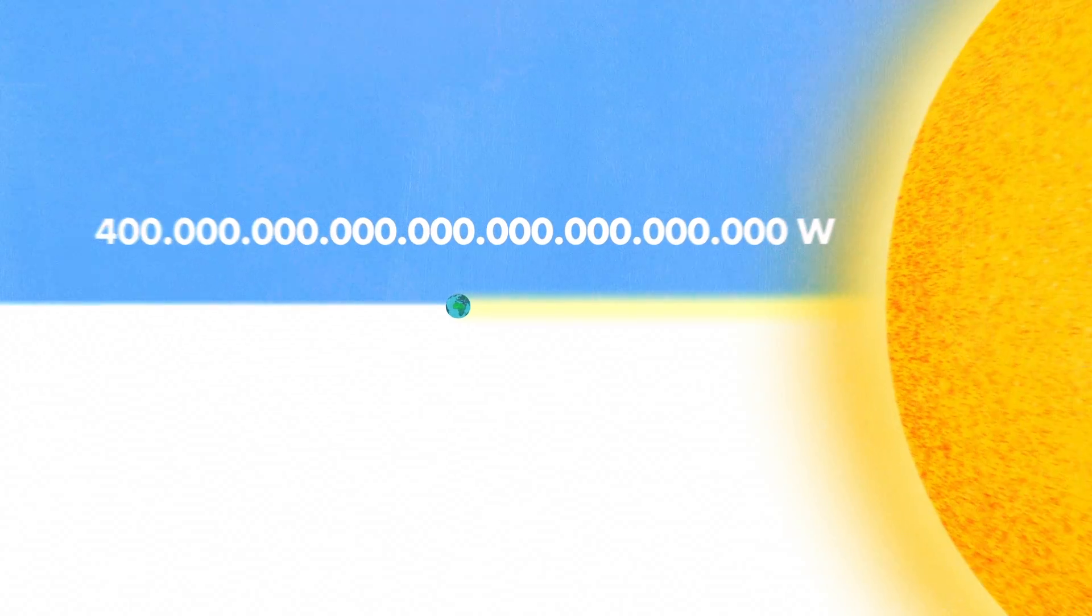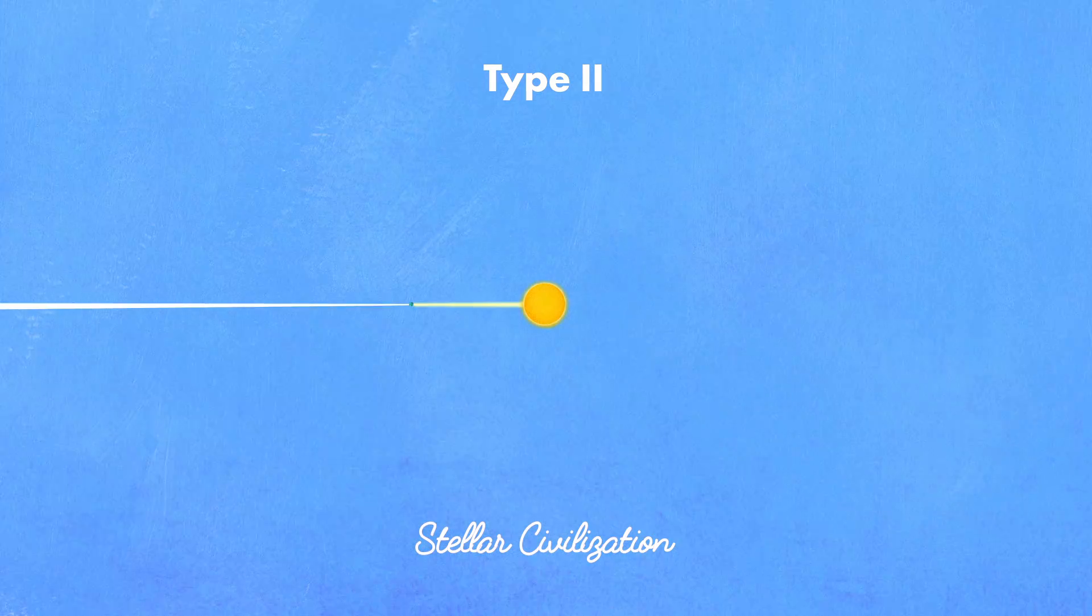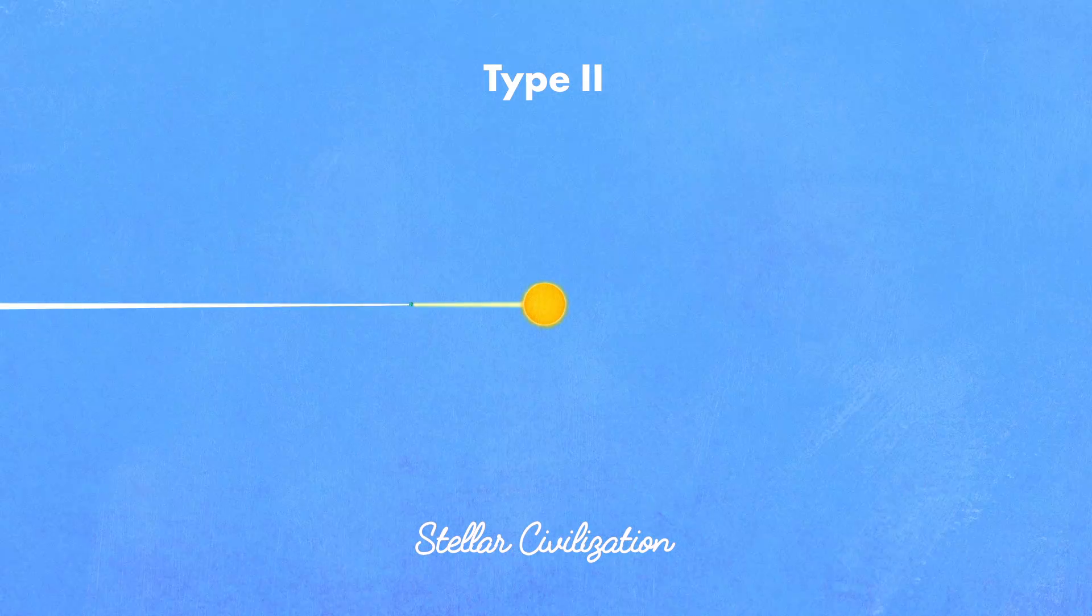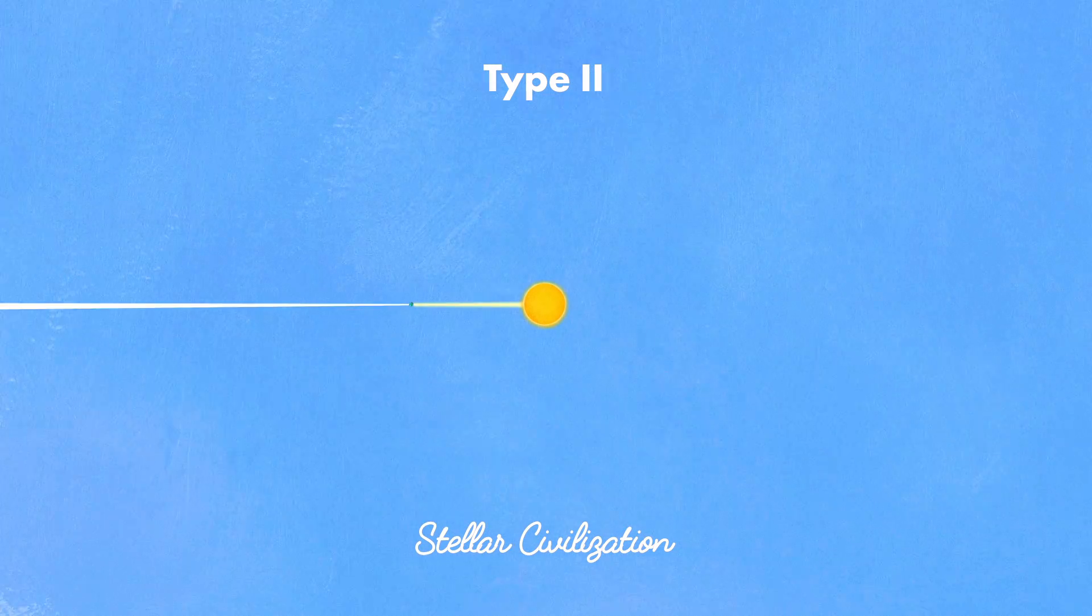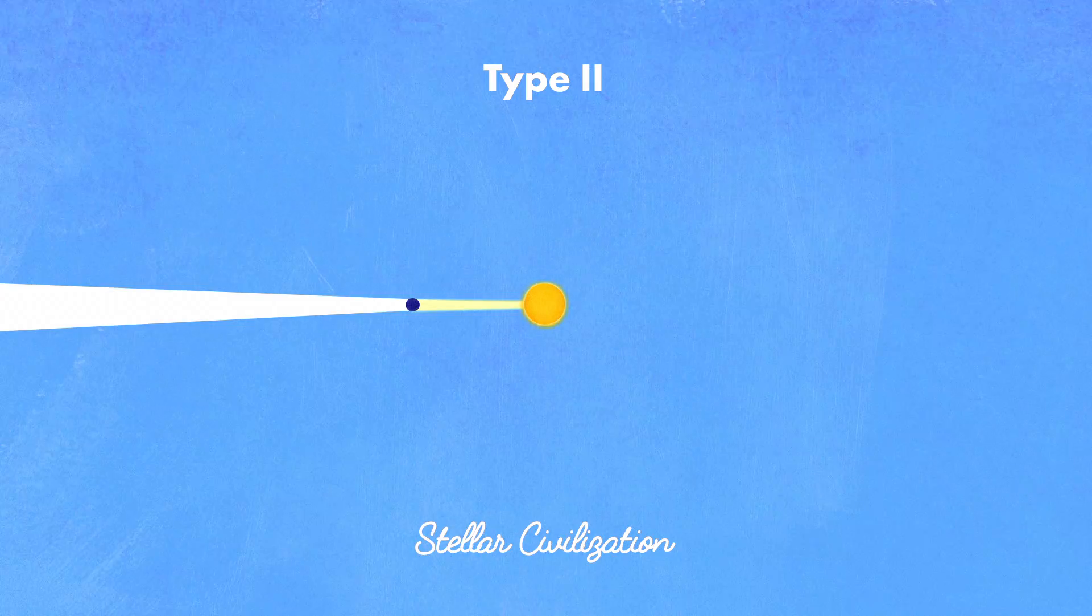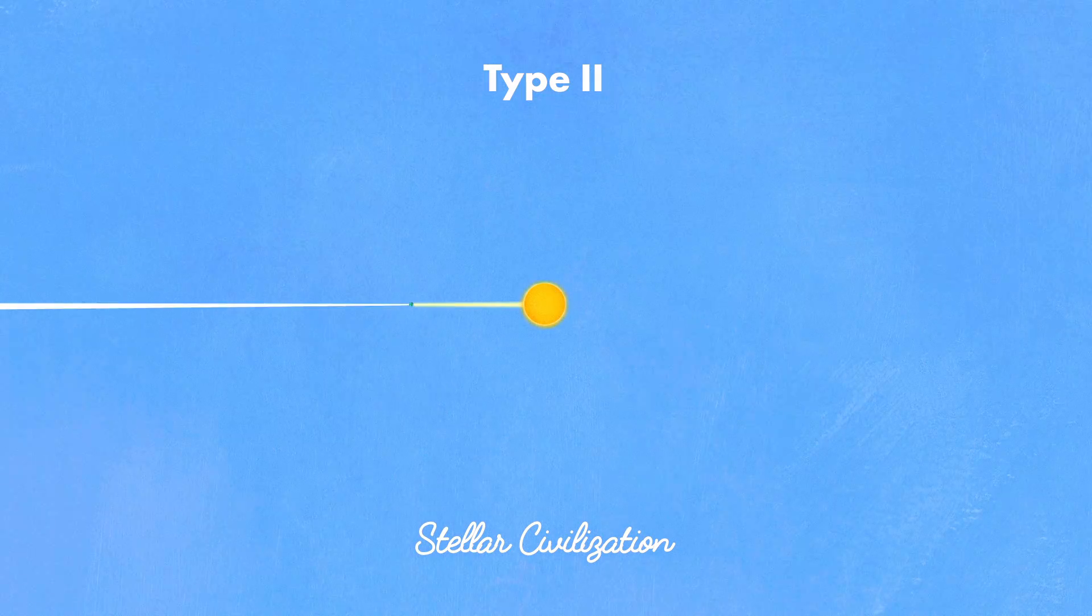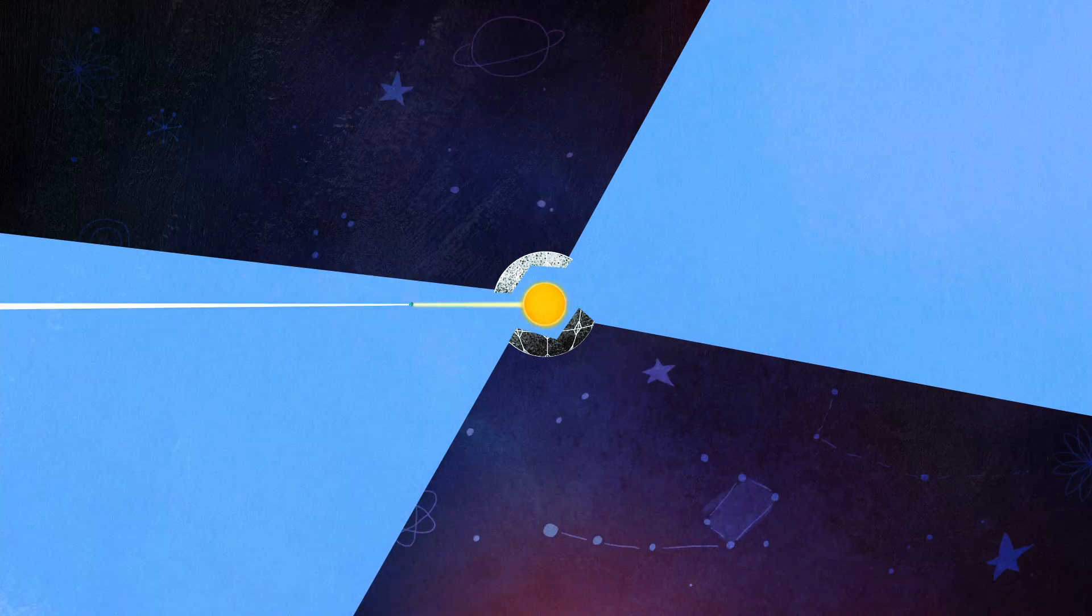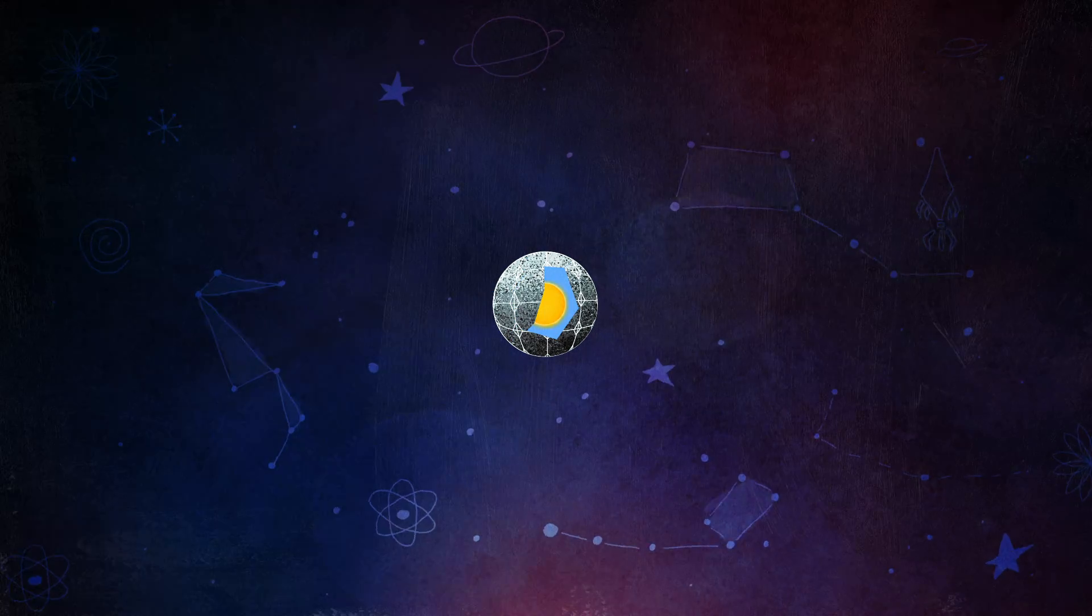Well, the Earth only gets a sliver of the Sun's energy, while the rest of its 400 yotta watts is wasted in dead space. But a Type II, or stellar civilization, would make the most of its home star's energy. Instead of installing solar panels around a planet, a Type II civilization would install them directly orbiting its star, forming a theoretical structure called a Dyson Sphere. And the third step?